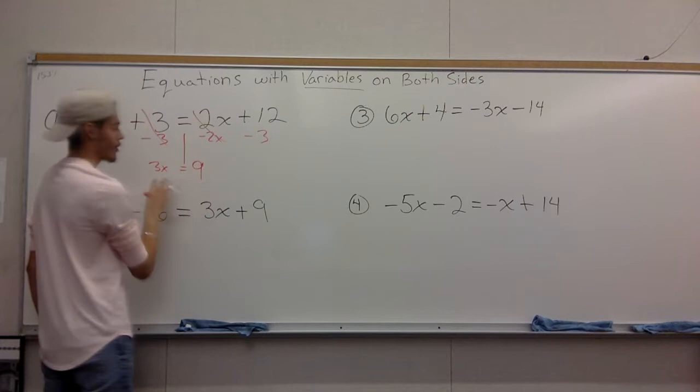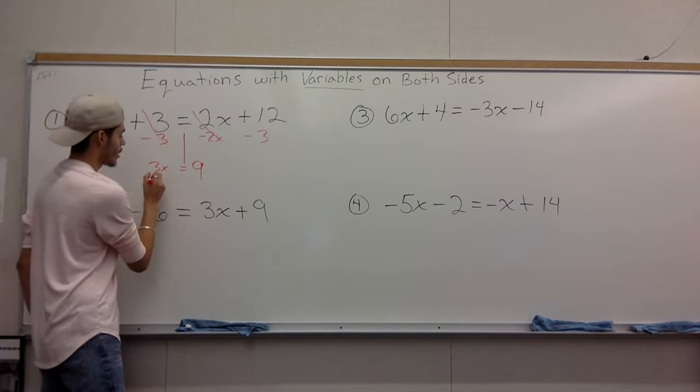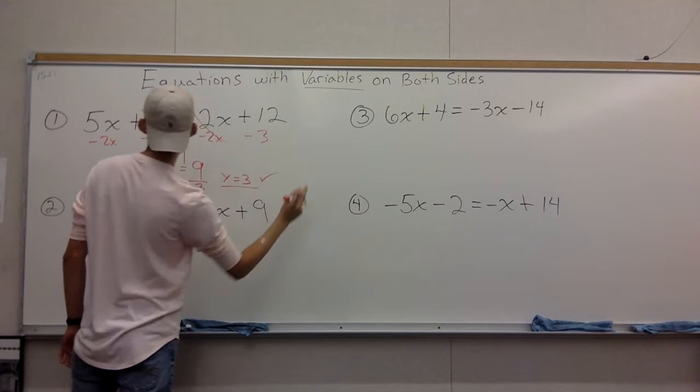Now, you have 3x equals to 9. You have a multiplication problem, you do the opposite, which is division. Divide 3 to both sides, x equals 3. Simple as that.